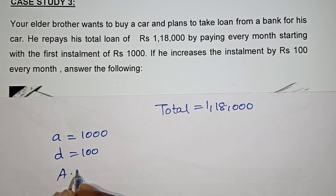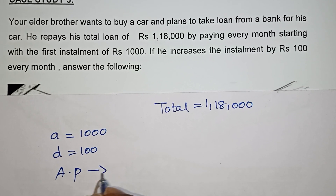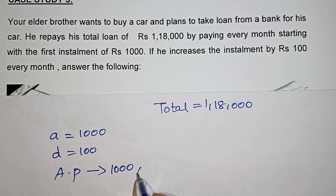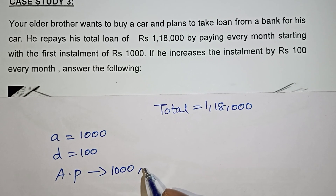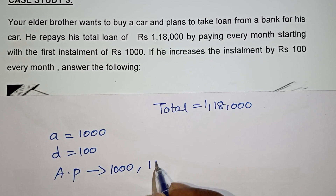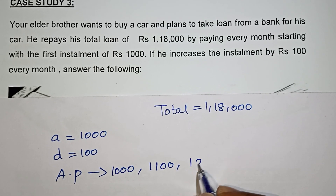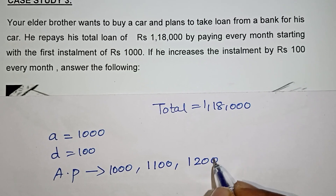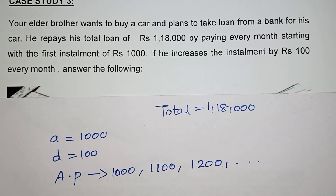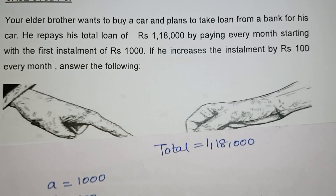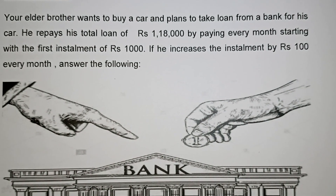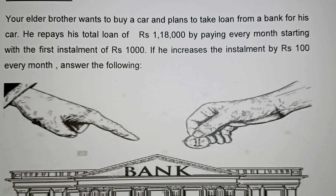So the AP is: in the first month he paid 1000 rupees, the next month he will be paying 1100, the next month 1200 — every month he is increasing his amount. Now let's answer the following questions.